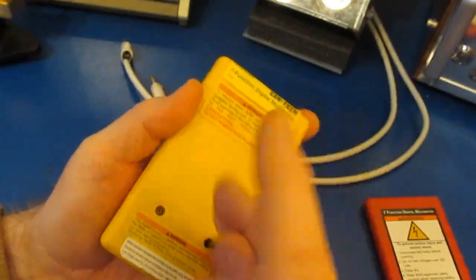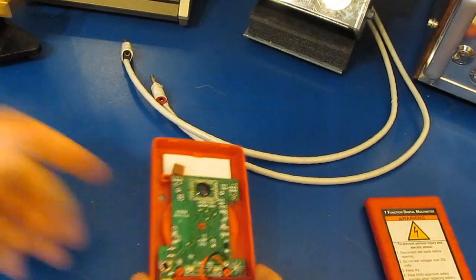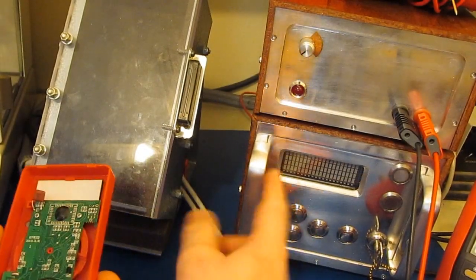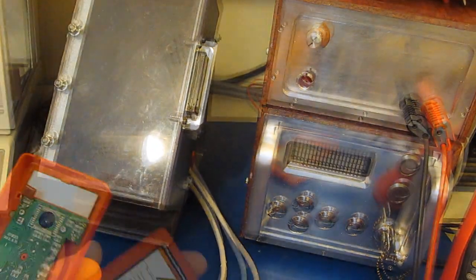So I think what I'd like to do before we finish up this video is run this thing across our half-cycle line simulator. Again, normally with the higher class meters that I test, we can't run that.